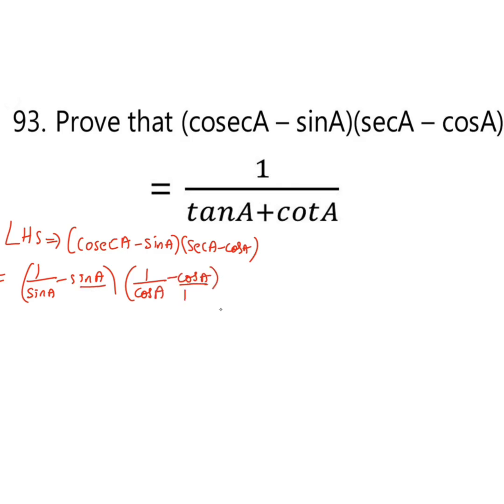Now by taking LCM and cross multiplying, it becomes 1 minus sin square A divided by sin A, and here it will be 1 minus cos square A divided by cos A.